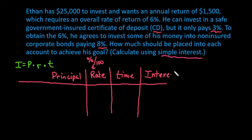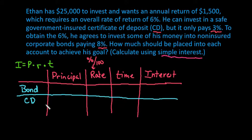And then the last column is going to be our interest, and remember that the interest is using this formula, the principal times the rate times the time. We have three different areas. We have a bond, we have the CD that we're going to be putting money into, and the last one is our total amount.